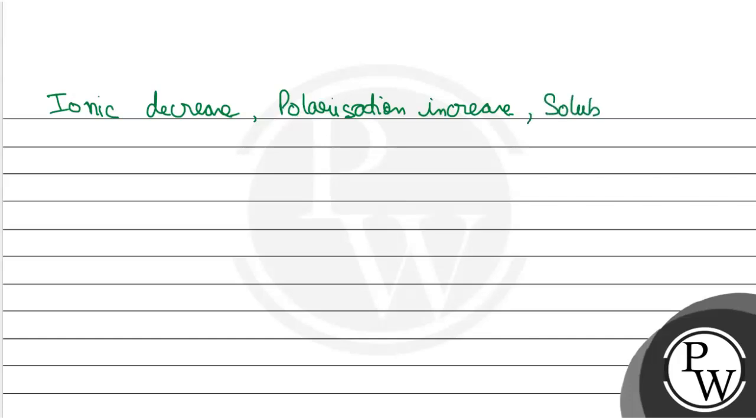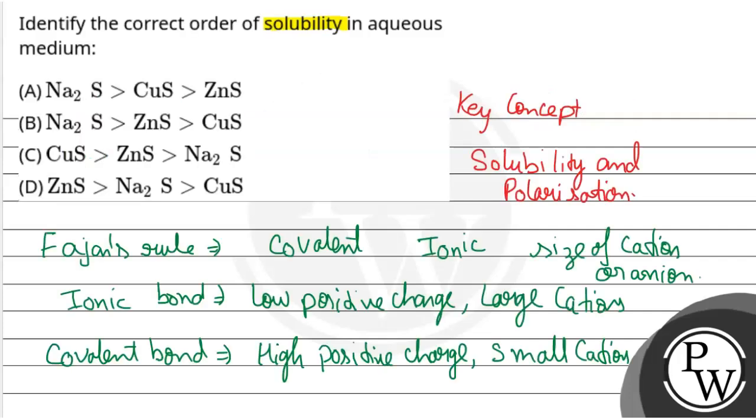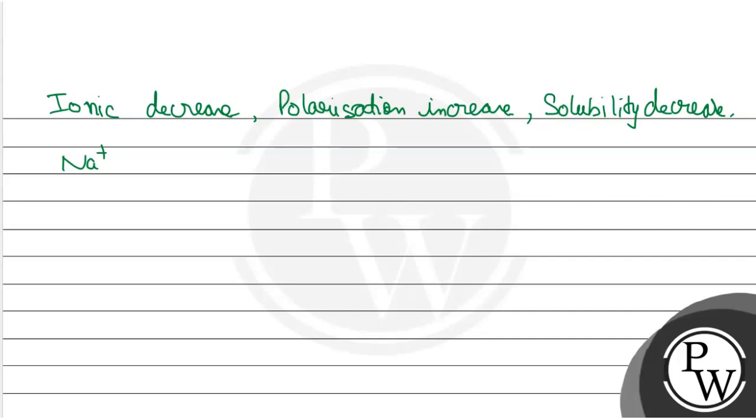Solubility will decrease. Now we will see. We will see here mainly Na2S, CuS, and ZnS. So we will see how we will compare the metals.